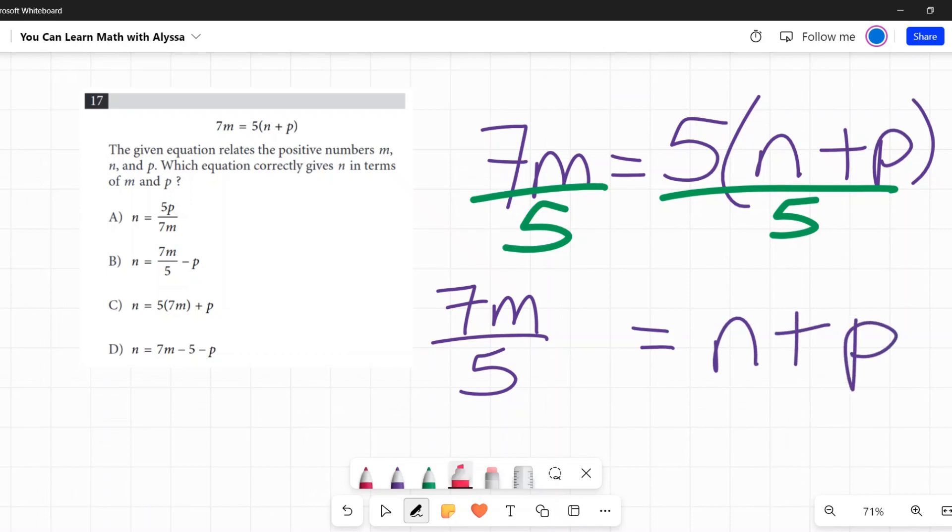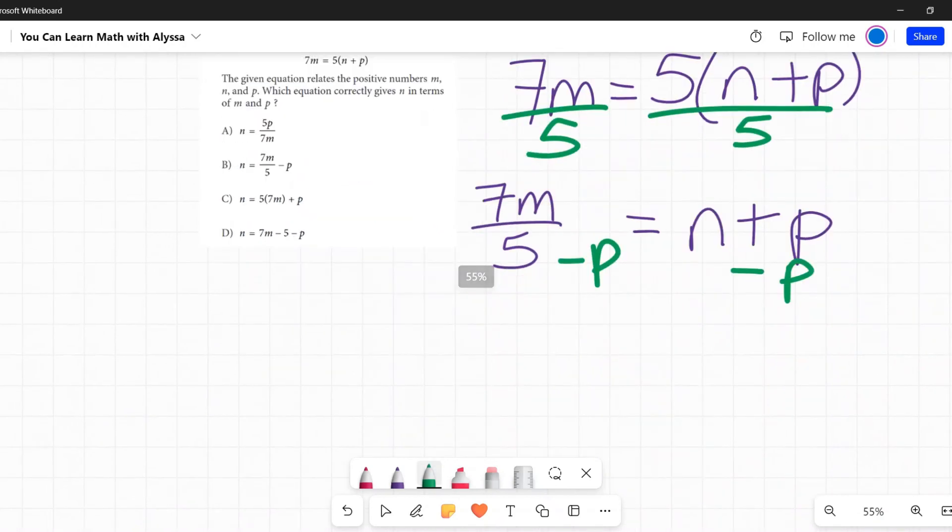Well, I am adding p to n. So to undo that, I need to subtract p from both sides. So on the left-hand side, I have 7m over 5 minus p. And on the right is just n.